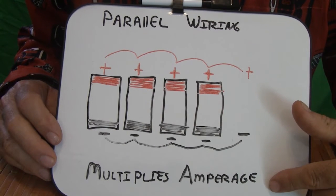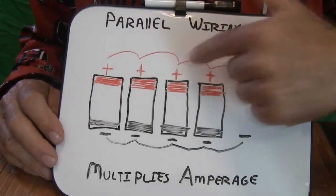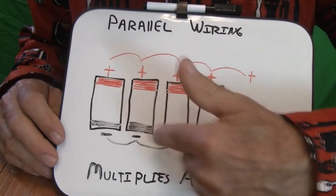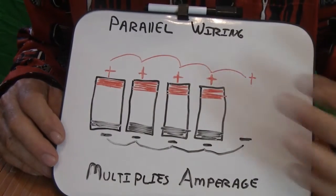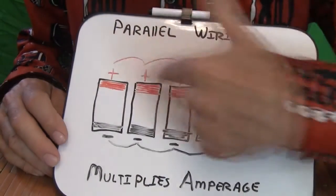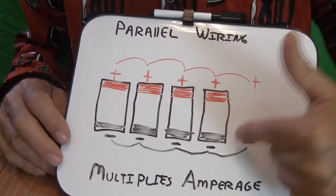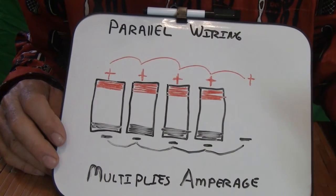So in this diagram, we've got four different cells. They're all connected together. All the positives are connected together, and all the negatives are connected together. This will multiply the amperage on this cell. The positive terminal of this battery is essentially the entire top of the battery, and the negative terminal is the entire bottom of the battery.